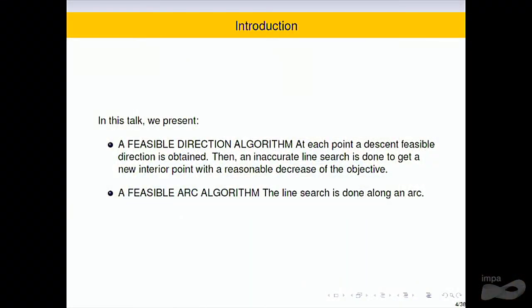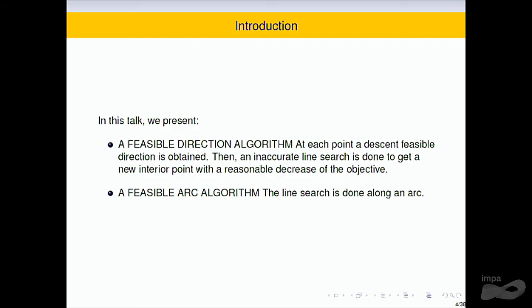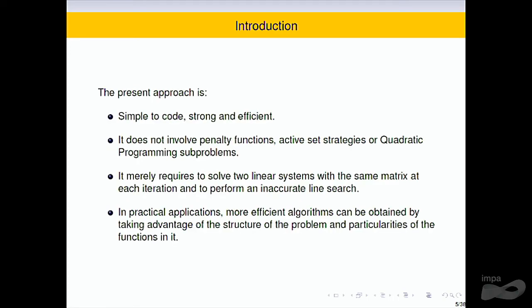Then I shall describe the feasible arc interior point algorithm, FIPA. The line search is done along an arc. In the case of FIPA, we can prove in a very strong way, for the quasi-Newton method, two-step superlinear convergence. These algorithms are very simple to code, strong and efficient. They do not involve penalty functions, strategies, quadratic programming subproblems.